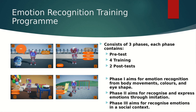Emotion recognition skill is an important contributor to social and communication development. Children with ASD are characterized by deficits in their emotion recognition skills, so improving this ability is extremely crucial for their development. The emotion recognition training program consists of three phases. Each phase consists of a pre-test, four training sessions with two sessions per week, an immediate post-test, and a follow-up post-test after two weeks. As the virtual robot doesn't have any facial expressions, it has been programmed to express emotions using body language, change of face color, and eye shape.